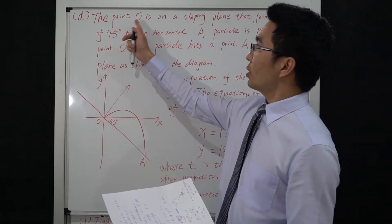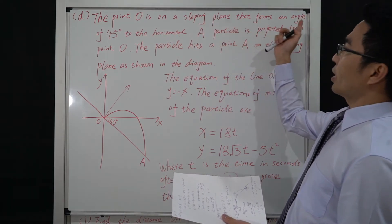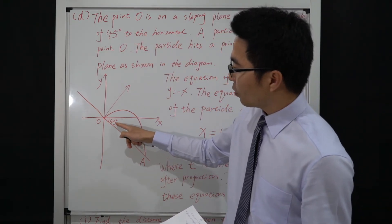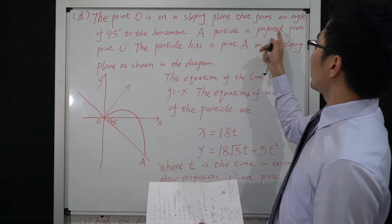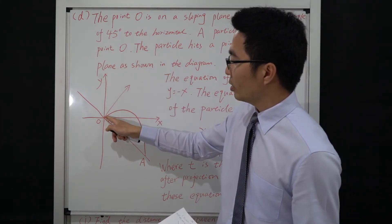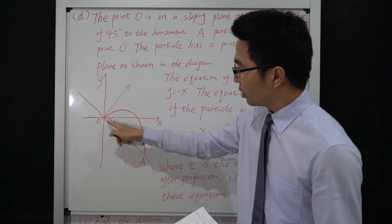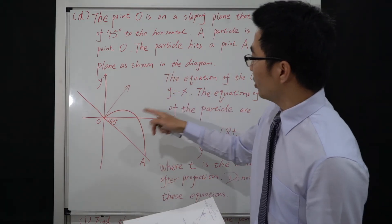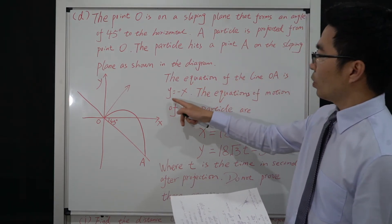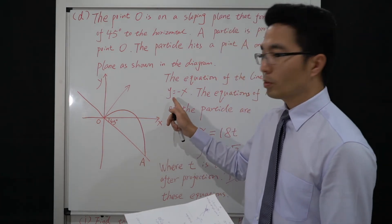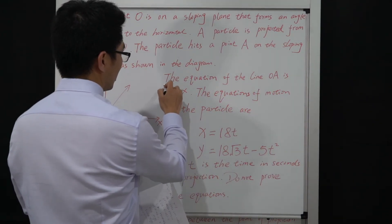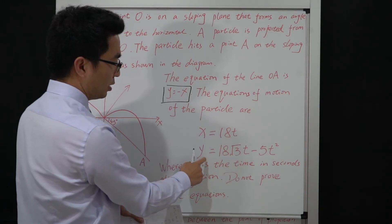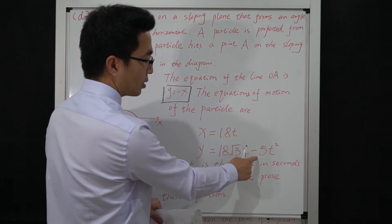Let's go to part d. Point O is on a sloping plane that forms an angle of 45 degrees to the horizontal. A particle is projected from O and hits the sloping plane at point A. The line OA lies on the plane y = −x. The equations of motion are x = 18t and y = 18√3 t − 5t², where t is time in seconds after projection.